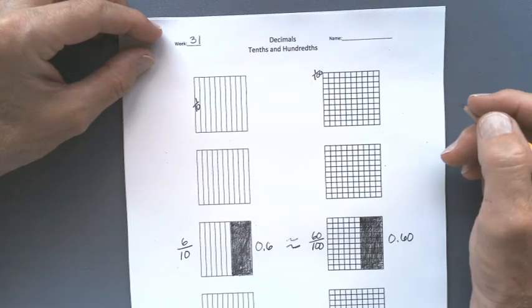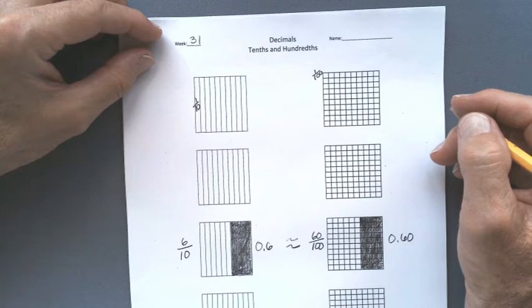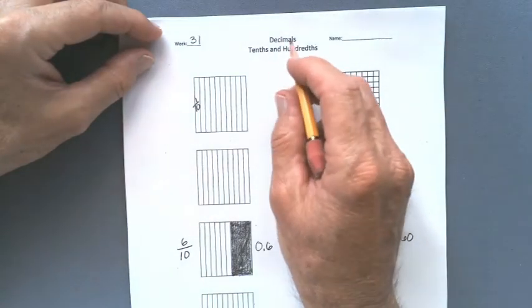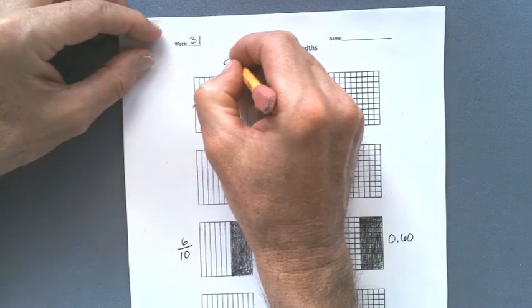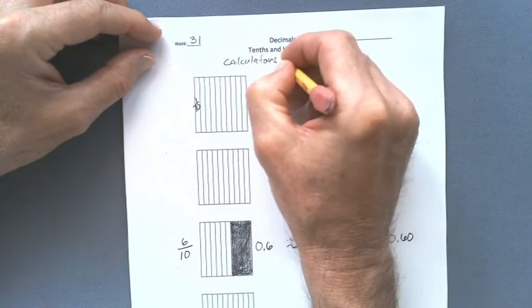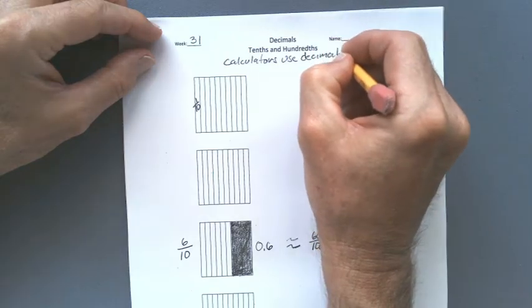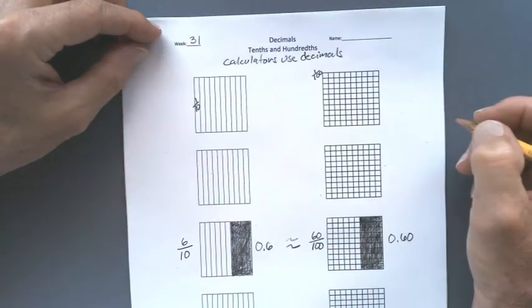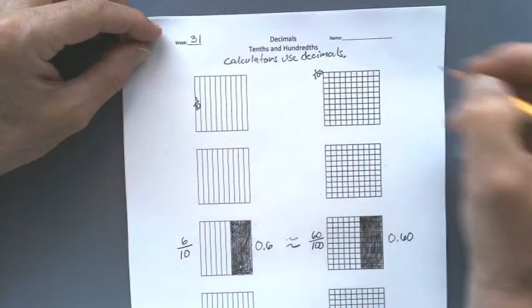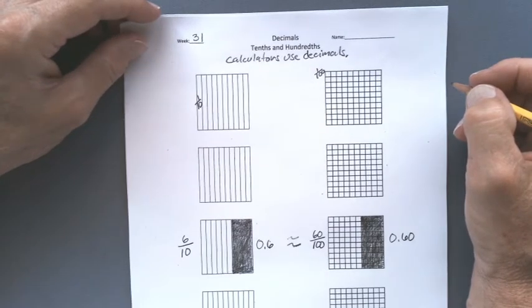Calculators. If you use a calculator you're not going to get an improper fraction or even a fraction at all. You're going to get a decimal. So calculators use decimals. And since you're going to be using calculators in the upper grades it's good to know what a decimal is and how it relates to other fractions.